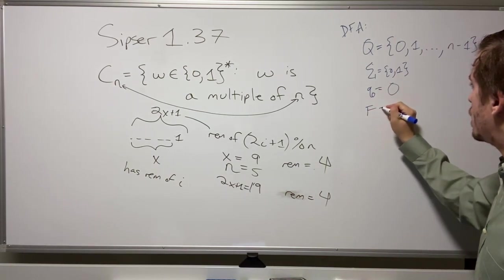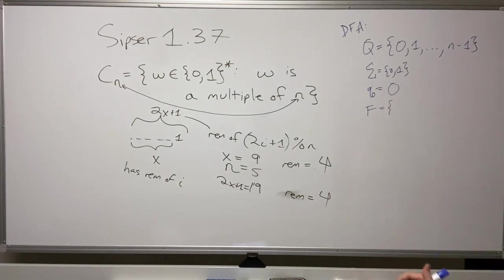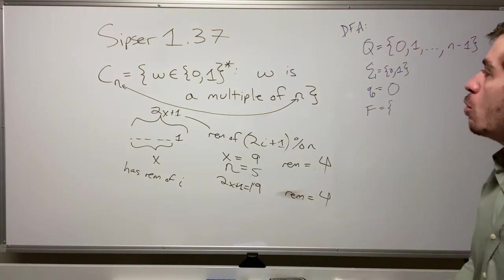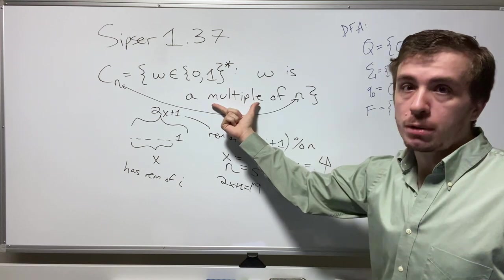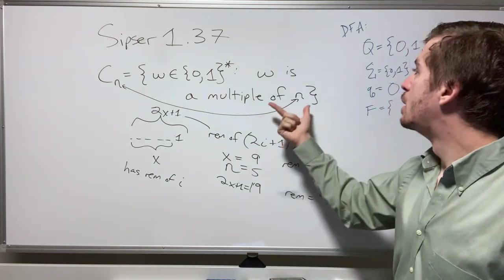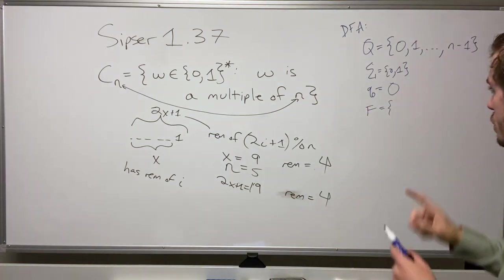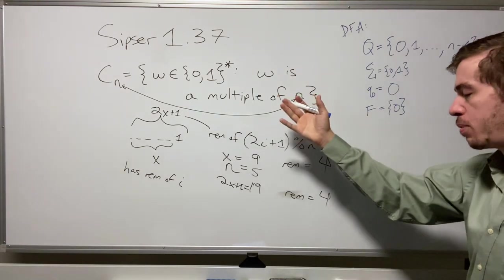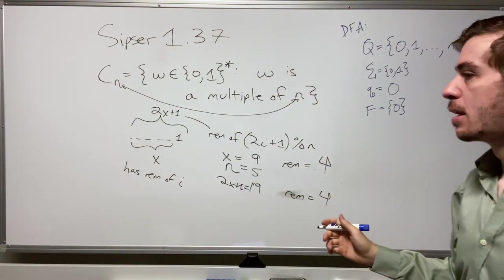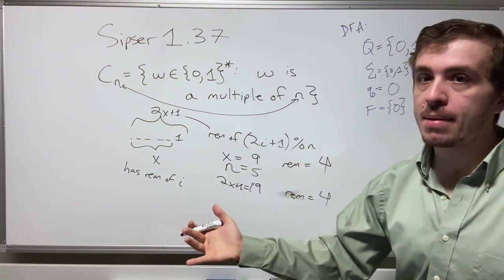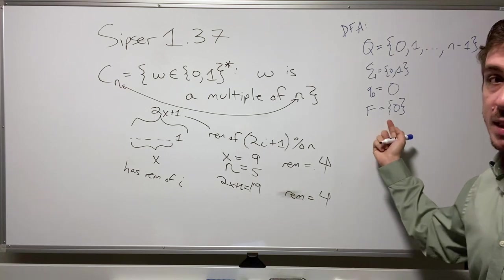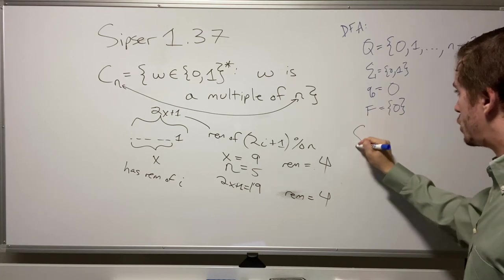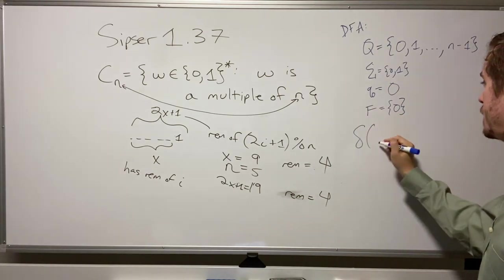The set of final states: we want only things that are a multiple of n, which means a remainder of 0, so only the zero state is a final state. If you had a related problem where the remainder is 1 or 3 mod n, you could set the final states to be {1, 3}, but for this problem we only accept remainder 0.